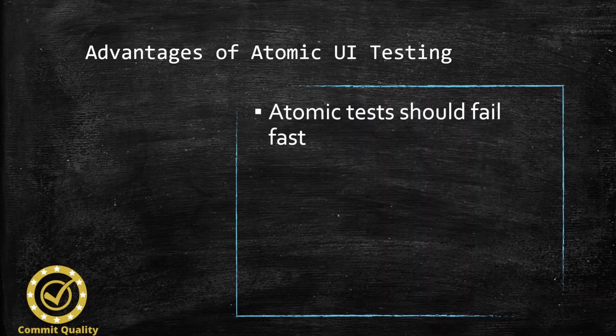What are the advantages of atomic UI testing? Well, they should fail fast. Since they're focused on a single feature or a piece of behavior, the test should be small and manageable. But you might ask then, doesn't adding more tests make the overall execution slower? It's a good question. It means that when we do things like introducing parallelization into our tests, they execute quicker.